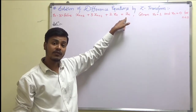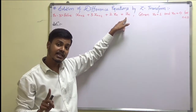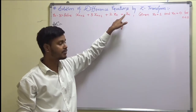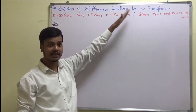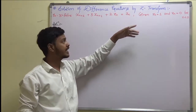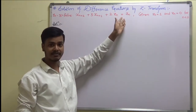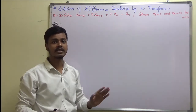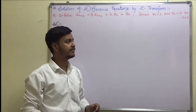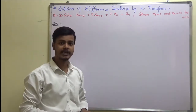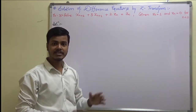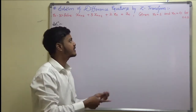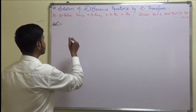This u(n) is the unit step function. Please keep in mind if anything is given on the right hand side like u(n), that is the unit step function. So can we start with this problem now? Let us start.